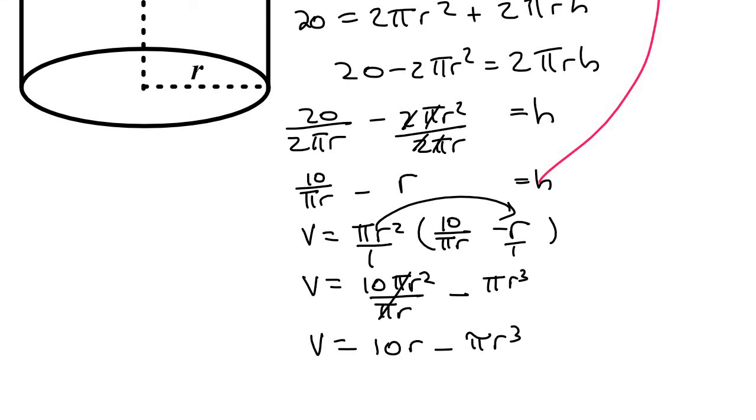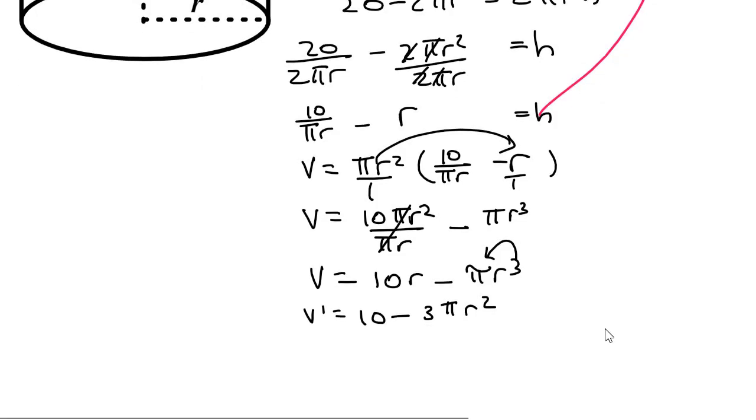Now to find minimums and maximums, it's always the first derivative equal to 0. So we take the first derivative, which is 10 minus, now this 3 is just going to multiply with π, so you can type it on the calculator if you want. So it's 3πr², and then we're going to make that equal to 0 because that's how you find minimums and maximums.